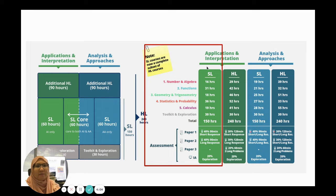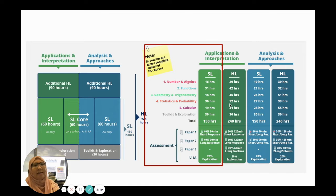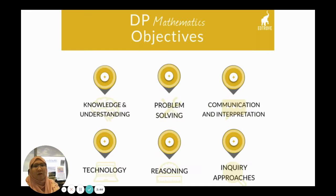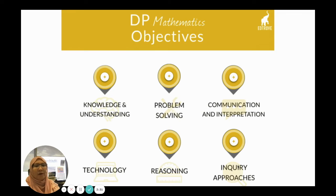Here is a snapshot of the differences between Math AI and Math AA. You can see that Statistics and Probability has the highest number of teaching hours, which means you will require to use data and interpret data within this course. All four math courses have 6 objectives: knowledge and understanding, problem solving, communication and interpretation, technology, reasoning, and inquiry approaches.